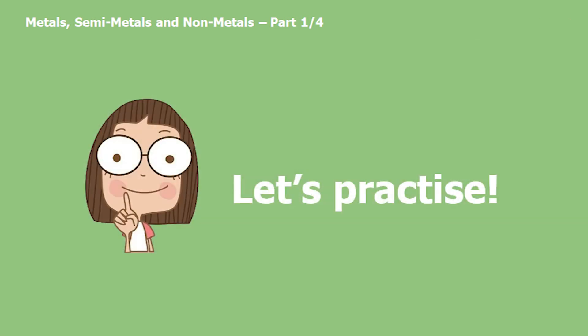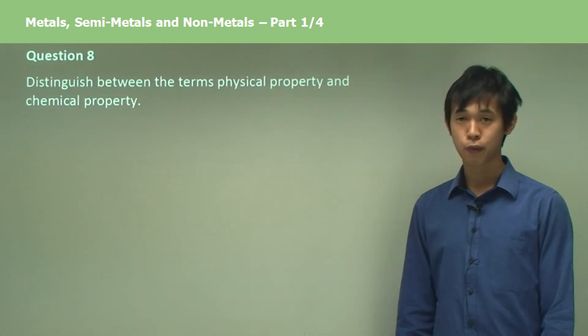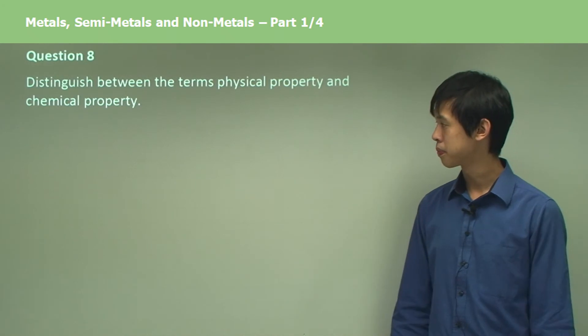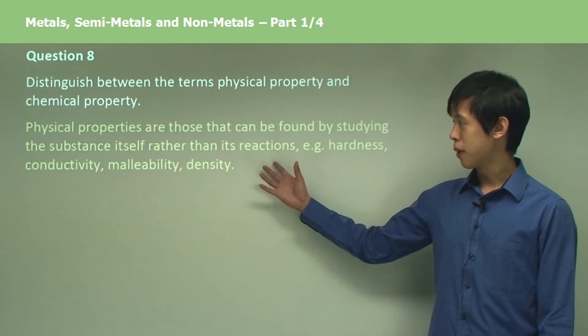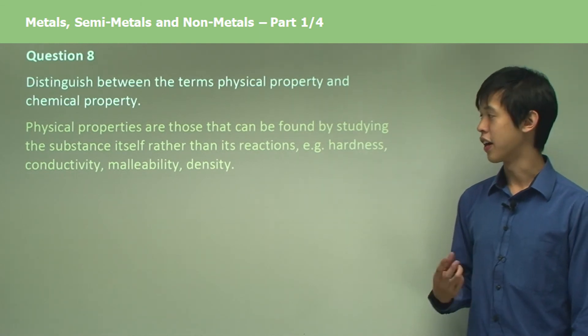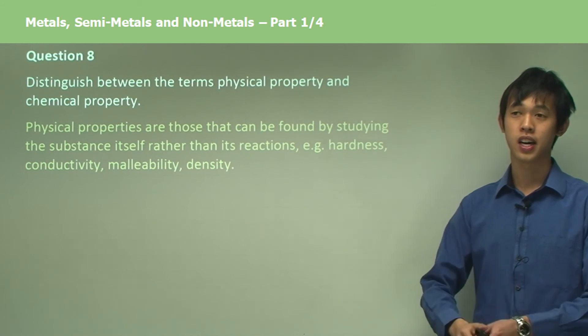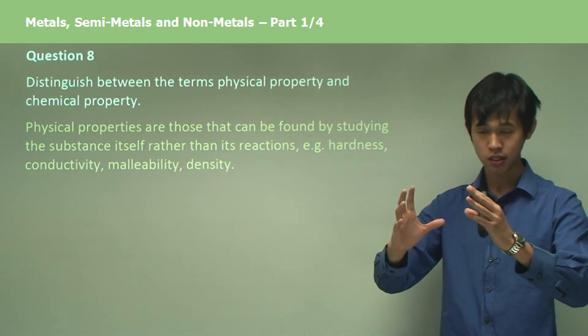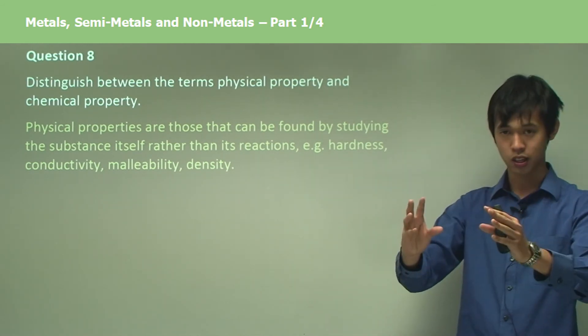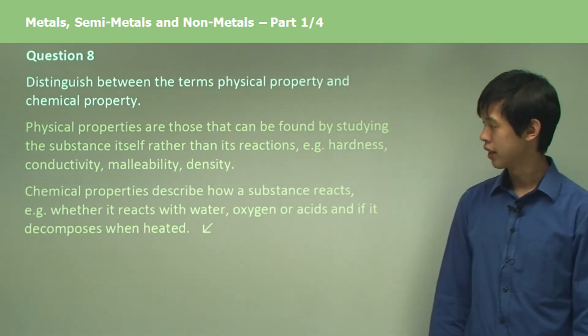Let's distinguish between the terms physical and chemical property. Physical properties are those that can be found by studying the substance itself rather than the reactions it undergoes. Physical properties are found by looking at the substance and doing things just to the substance, but not looking at the reactions within that substance.